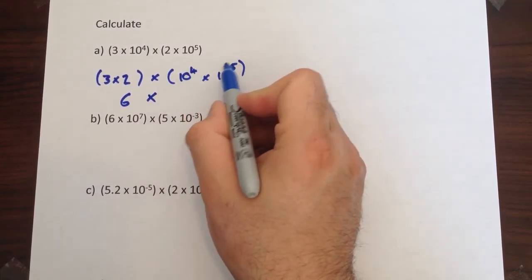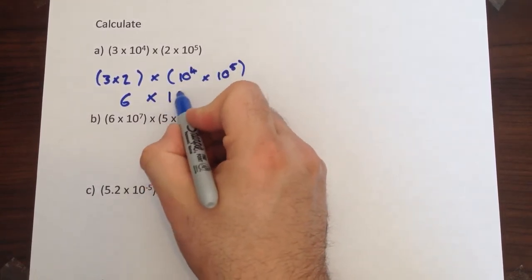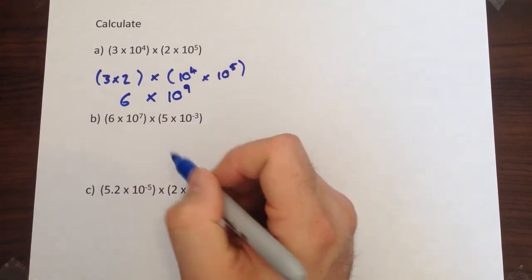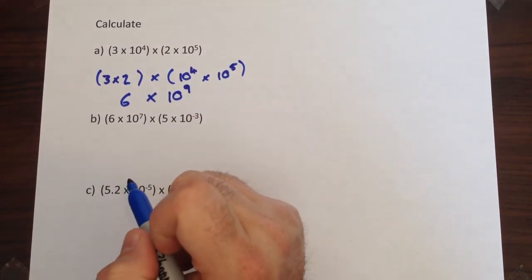Now when you multiply index numbers you add the powers. So 4 add 5 gives you 9. So the answer to this is 6 times 10 to the power of 9.